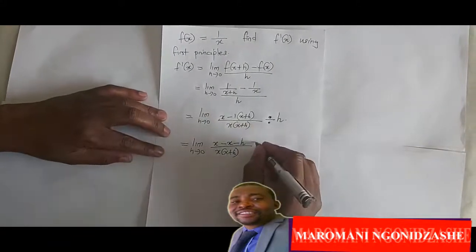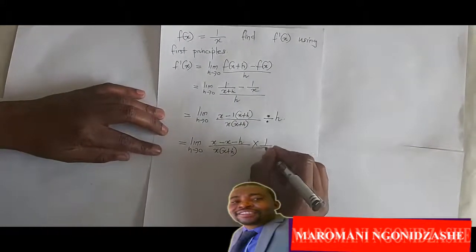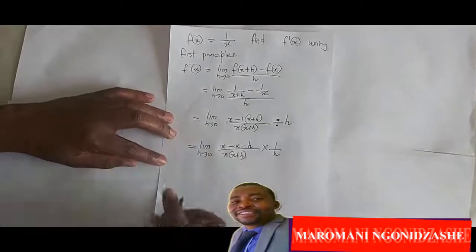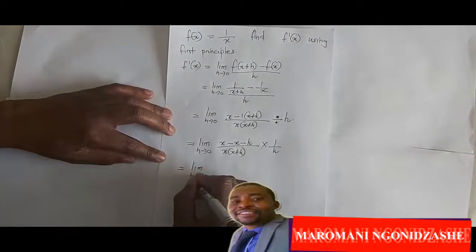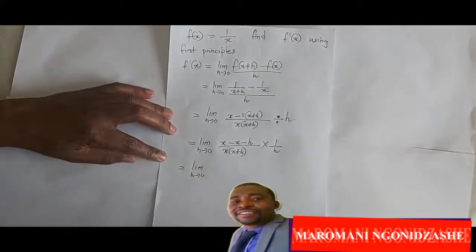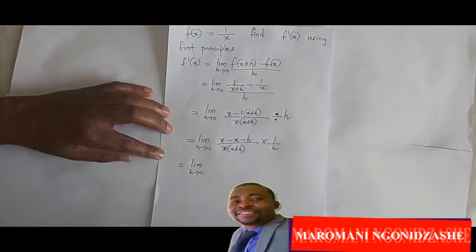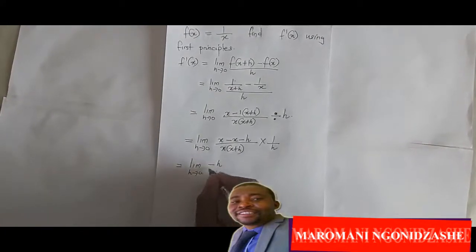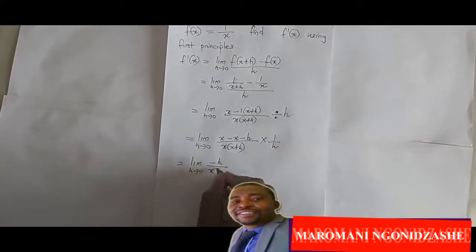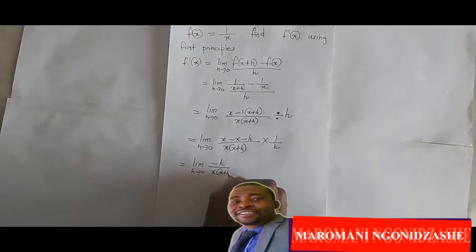Divided by h is like multiplied by 1 over h, which is now equal to limit as h approaches 0 of, x minus x that is 0, then I'm left with minus h over x into x plus h.